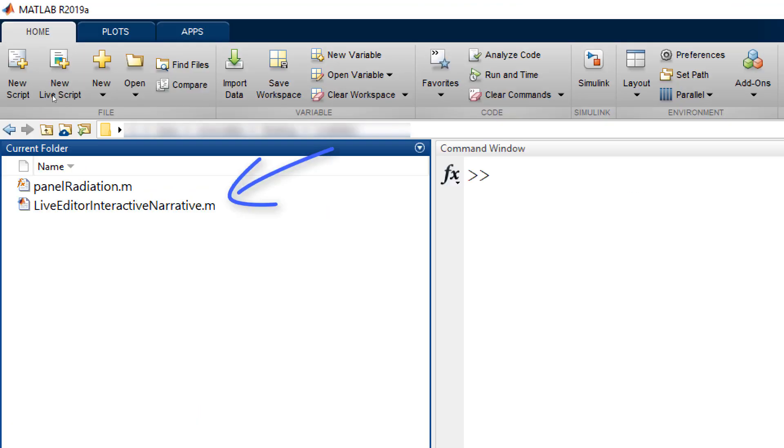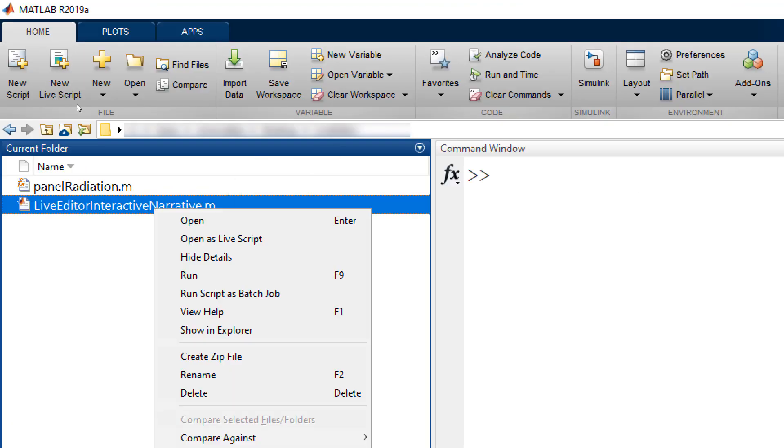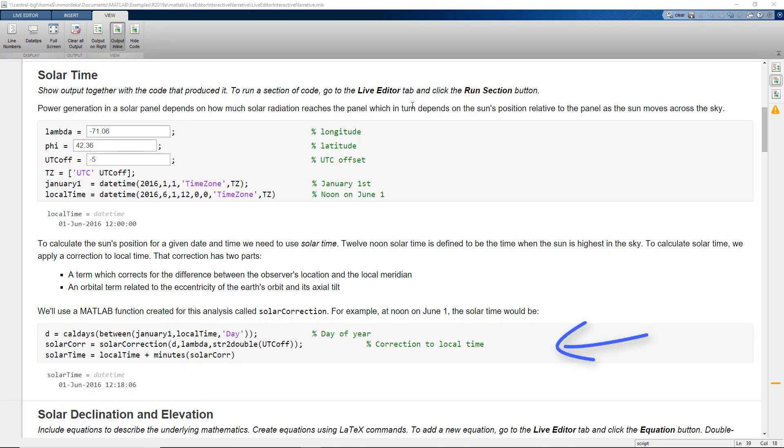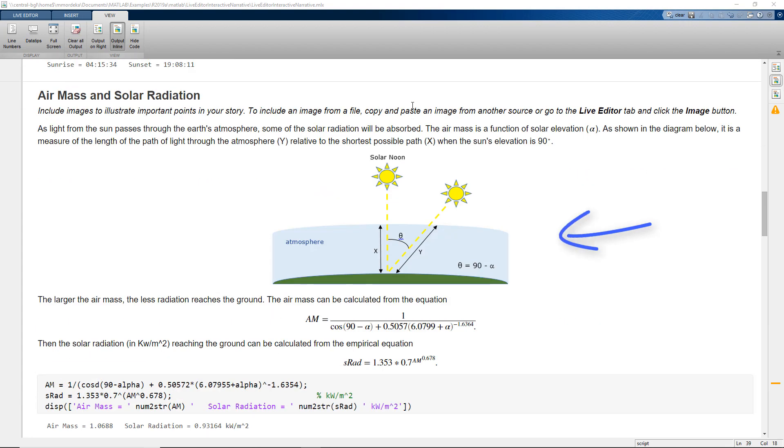To open any MATLAB script as Live Script, right-click on the MATLAB script and click on Open as Live Script. Here, we can write MATLAB code with formatted text, equations, and images to create an interactive narrative and tell a story with the computations.